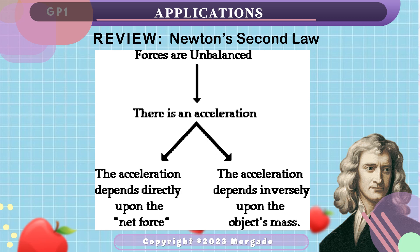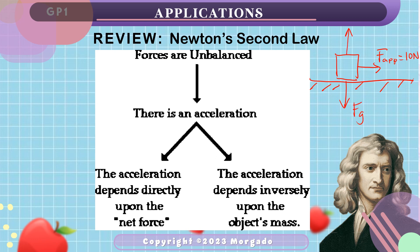First, we have to review the second law of motion. We learned in class that when forces are unbalanced, that means the net force is not equal to zero. There could be a lot of forces acting on the object, but when added, these forces result in a non-zero force. For example, an object is resting on the floor and you apply a force of 10 newtons to the right. This object also has a downward force of gravity and an upward force exerted by the floor, which is the normal force. These two vertical forces counter each other, and thus the net force in this scenario is equal to the applied force, because it is the only force not cancelled by another force.